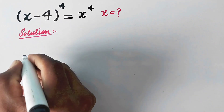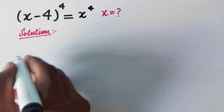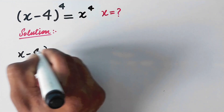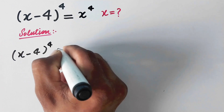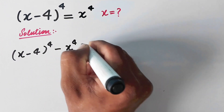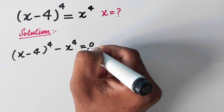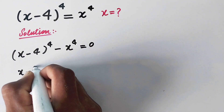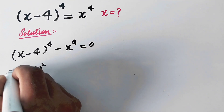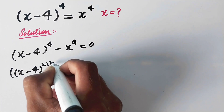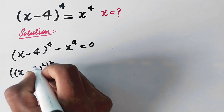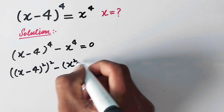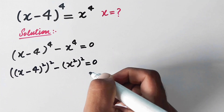In the first step, we can write x to the power 4 on the left side, like (x-4)^4 minus x^4 is equal to 0. And we can write (x-4)^2 whole square, which is the same as [(x-4)^2]^2 minus (x^2)^2 is equal to 0.